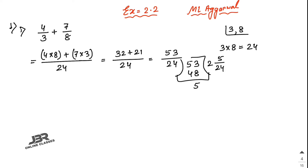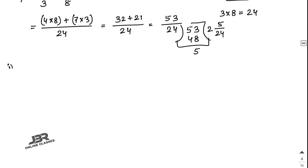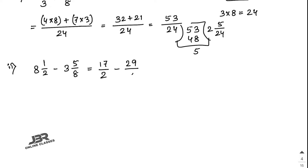Number 2: 8 and 1/2 minus 3 and 5/8. First convert to improper fractions. 8 times 2 is 16 plus 1 gives 17/2. And 8 times 3 is 24 plus 5 gives 29/8. Now find the LCM of 2 and 8. Since 2 ones are 2 and 2 fours are 8, the LCM equals 8.